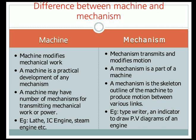In the case of mechanisms, examples include a simple typewriter or an indicator used to draw a PV diagram of an IC engine. The indicator is fixed to the IC engine and plots the graph — the indicator diagram — while the engine is working. Both the indicator and the typewriter are small mechanisms.